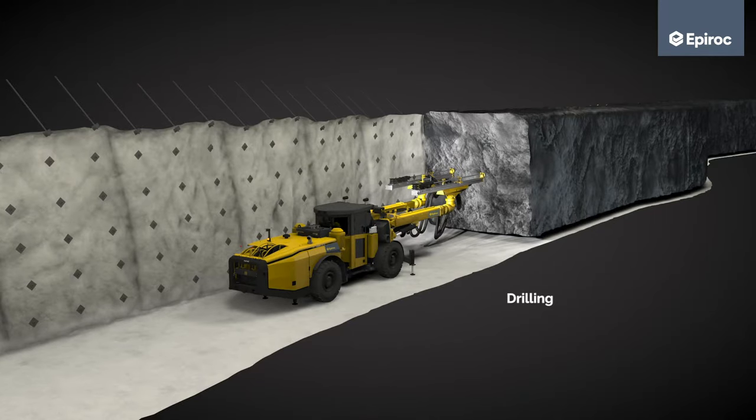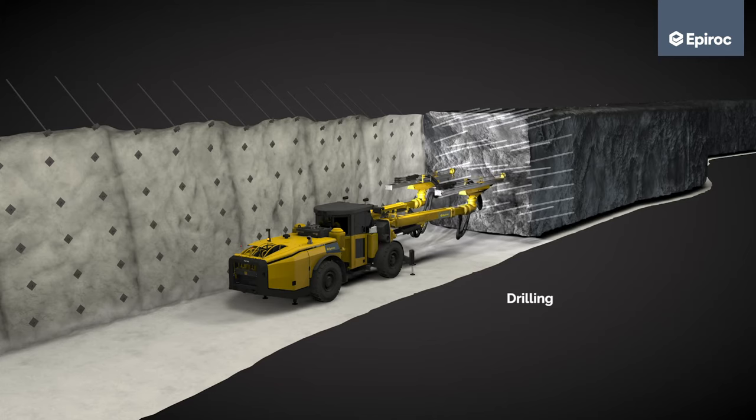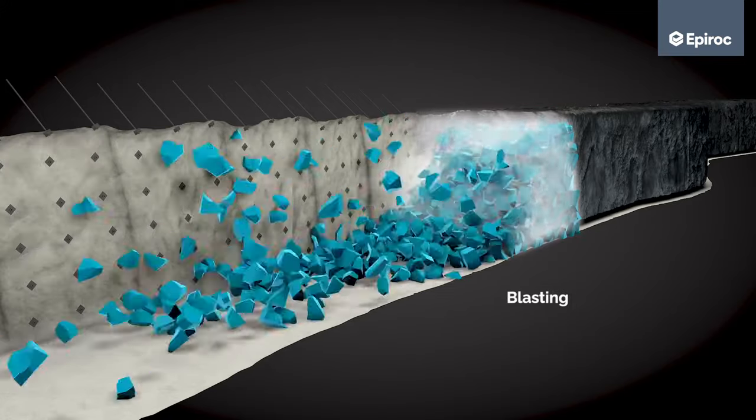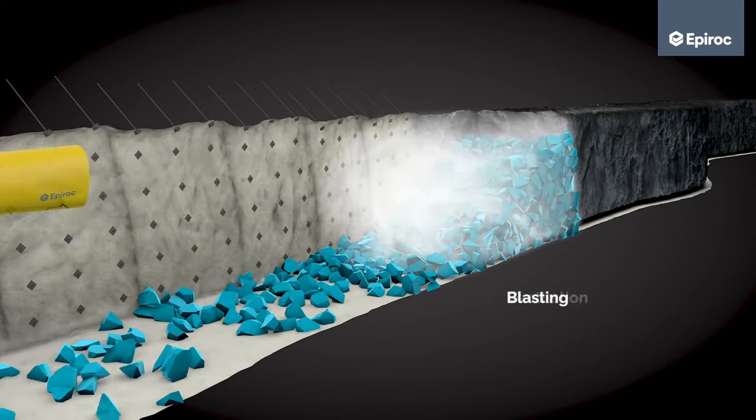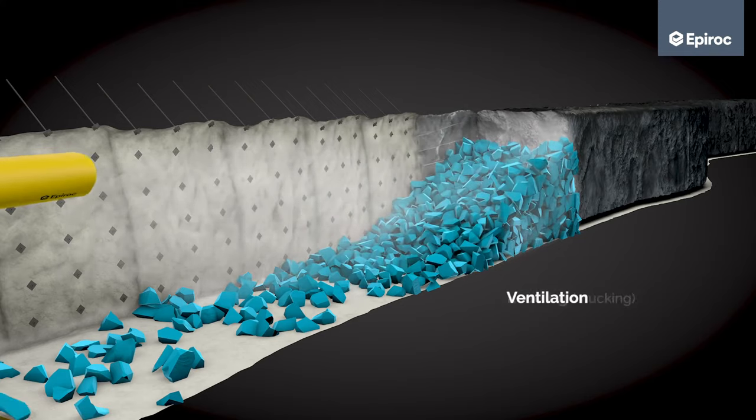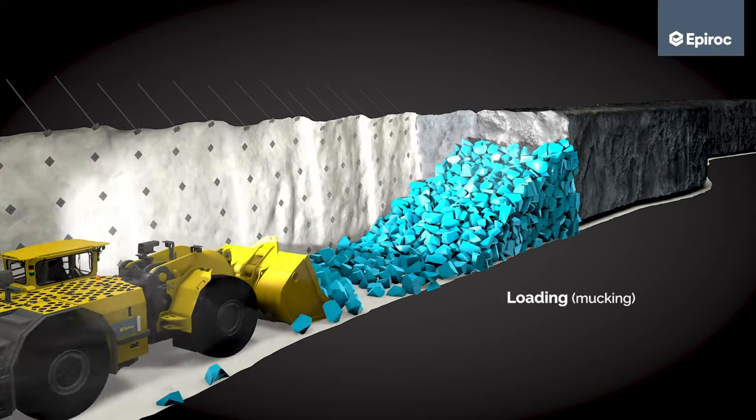To mine the ore in one of the slices, we first need to drill blast holes. The next steps are charging and blasting the ore, and then ventilate the toxic blast fumes. The ore is then mucked out and dumped into an ore pass or onto a truck.